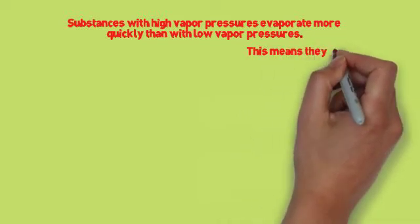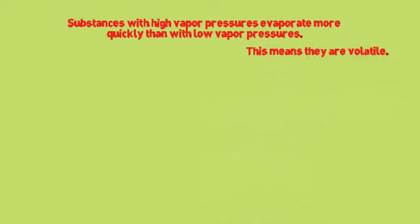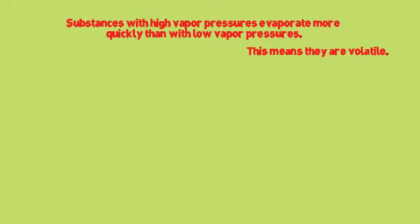So substances with higher vapor pressure evaporate more quickly than those with lower vapor pressure. This means they are volatile. The term volatile means that they evaporate quickly. That's basically what it means.